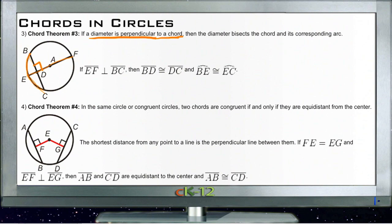And then finally, theorem number 4 tells us that if we have the same circle, or two circles that are the same, two chords are congruent if they're the same distance from the center.